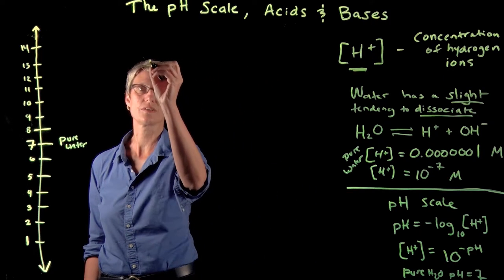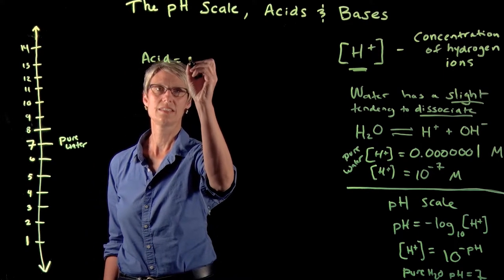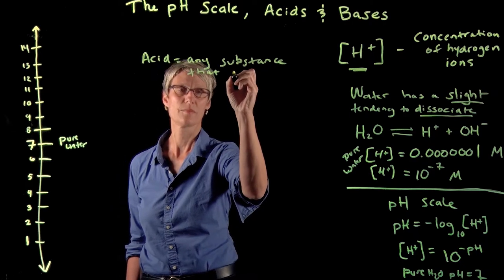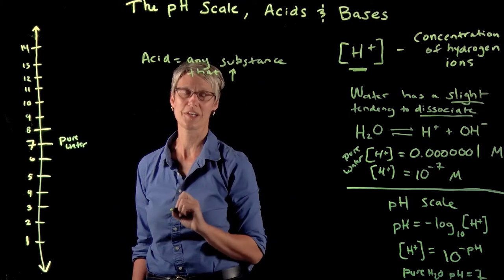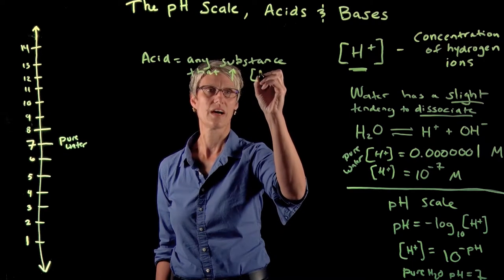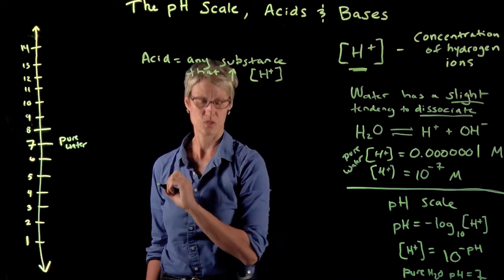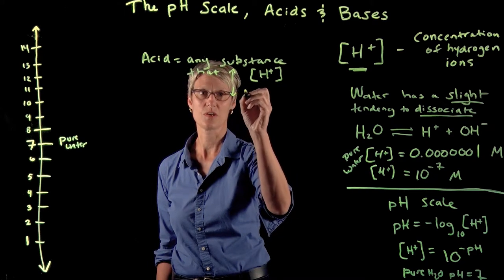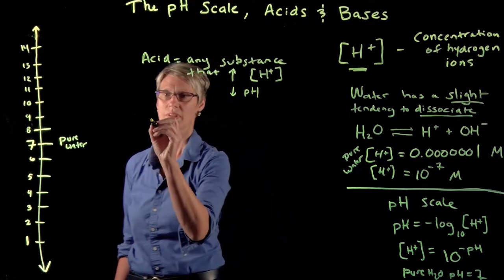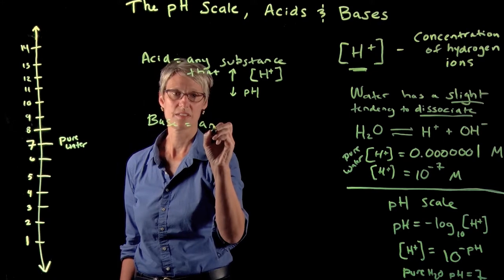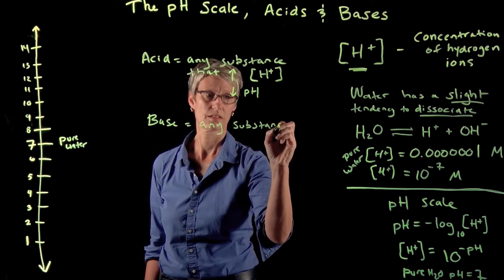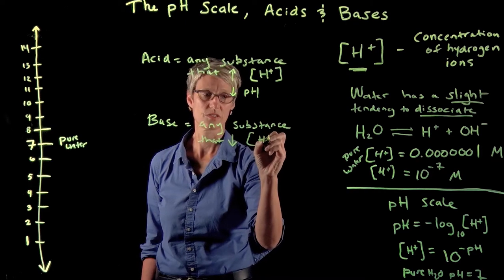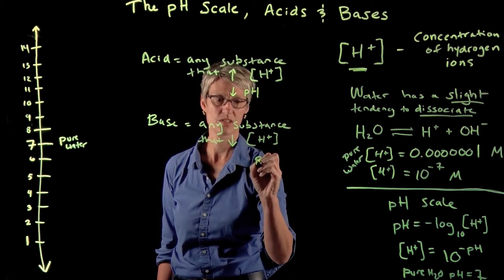An acid is any substance that increases the hydrogen ion concentration of a solution. Remember that when hydrogen ion concentration is increasing, the pH is going down. A base is any substance that decreases the hydrogen ion concentration, so a base causes the pH to go up.